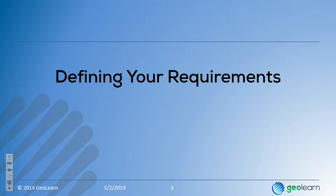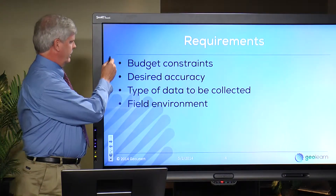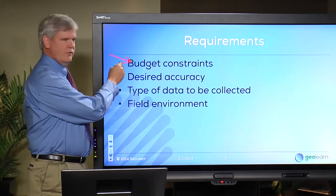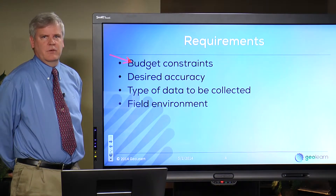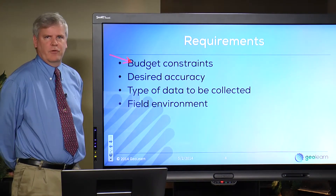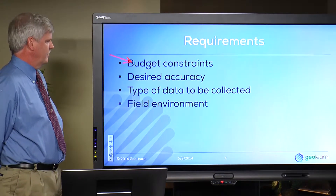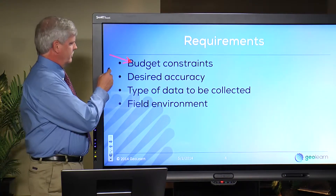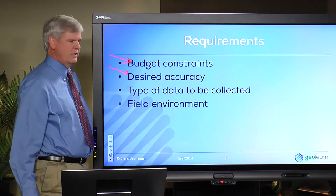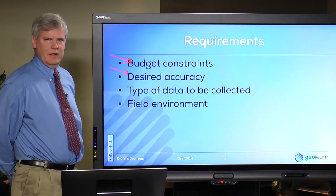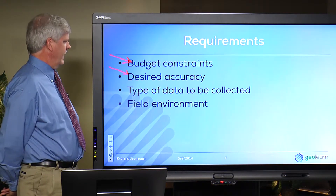So first of all, defining your requirements. A big one is budget constraints, and this is going to drive everything. If you don't have the budget for it, then you need to either save for a future purchase or modify your requirements to match your budget. There's a clear relationship between budget and accuracy, and I've got a slide here in a minute where we go through that analysis.